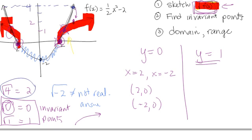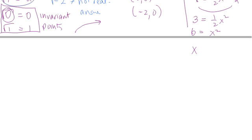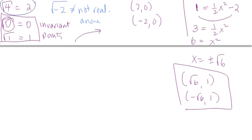And I'm going to do that by plugging in y equals 1. So I have f of x equals 1/2 x squared minus 2. This is a fancy way of saying y. So my y value is 1. So now I'm going to get x by itself. And that means I'm going to add 2 to both sides. So I get 3 equals 1/2 x squared. I'm going to multiply both sides by 2 to get rid of the fraction. So it's 6 equals x squared. And then I'm going to take the square root of both sides. And I get x equals plus or minus the square root of 6. So my other set of invariant points are the square root of 6, 1, and negative square root of 6, 1. So I've got 4 invariant points on this graph.